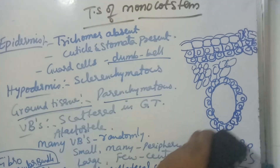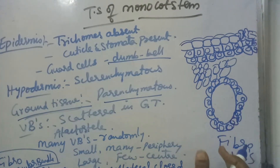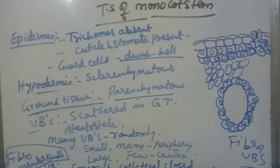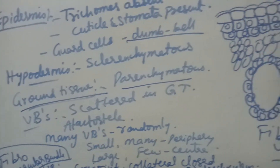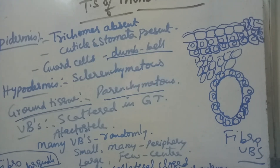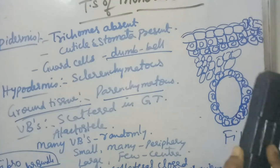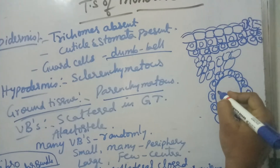Each vascular bundle in monocot stem is conjoint, collateral, and closed — meaning cambium is absent. Because cambium is absent, secondary growth is also absent in monocot stems. The xylem is endarch: protoxylem towards center, metaxylem towards periphery. The xylem elements are arranged in the form of a 'Y' letter.